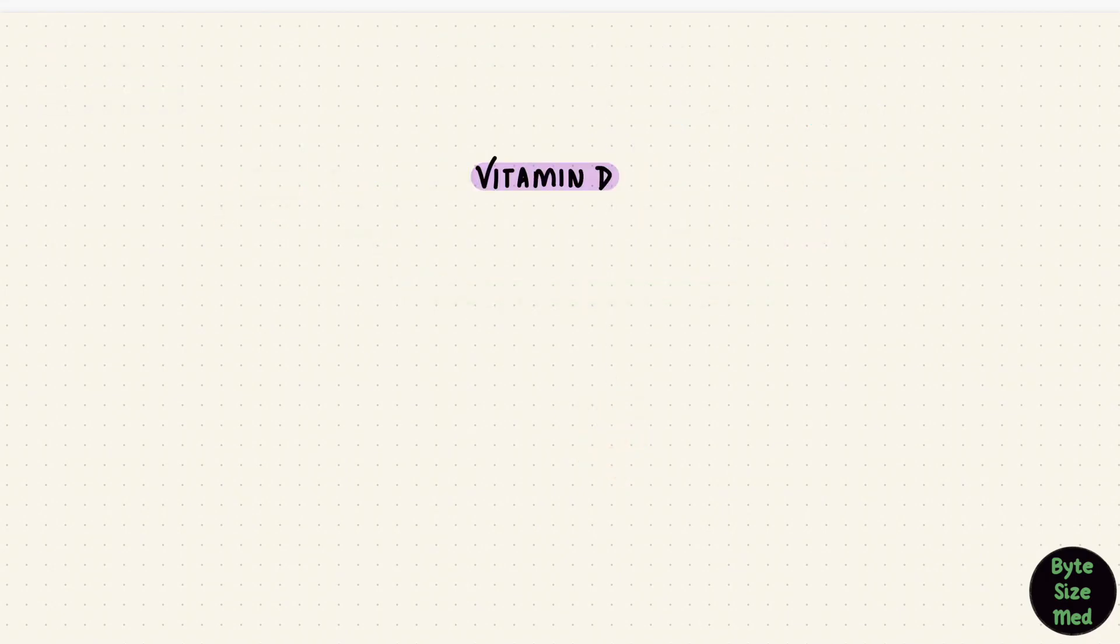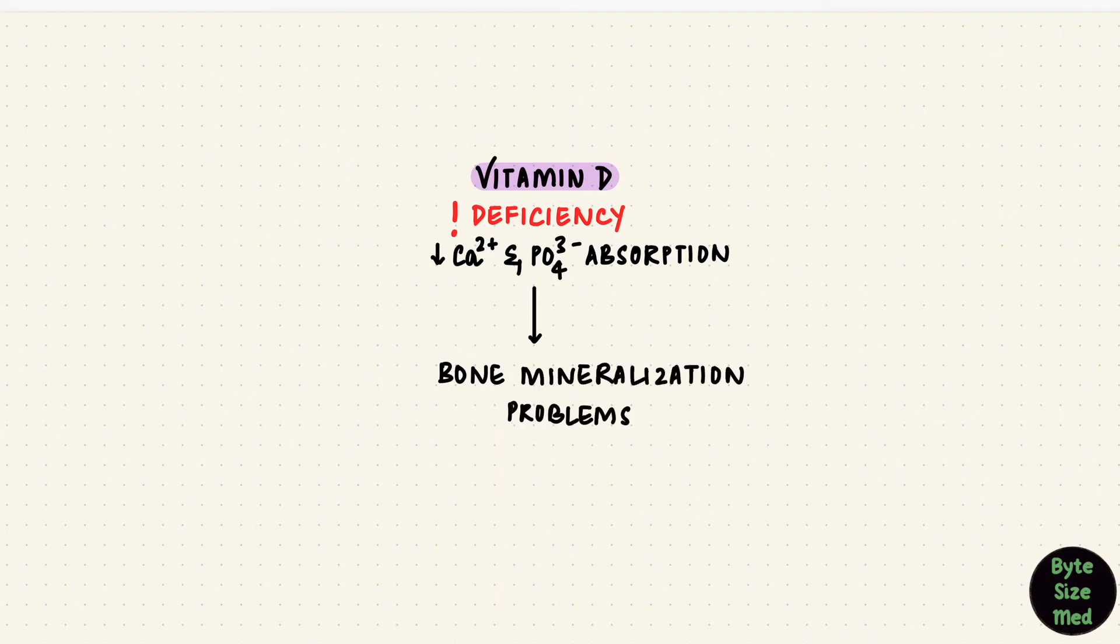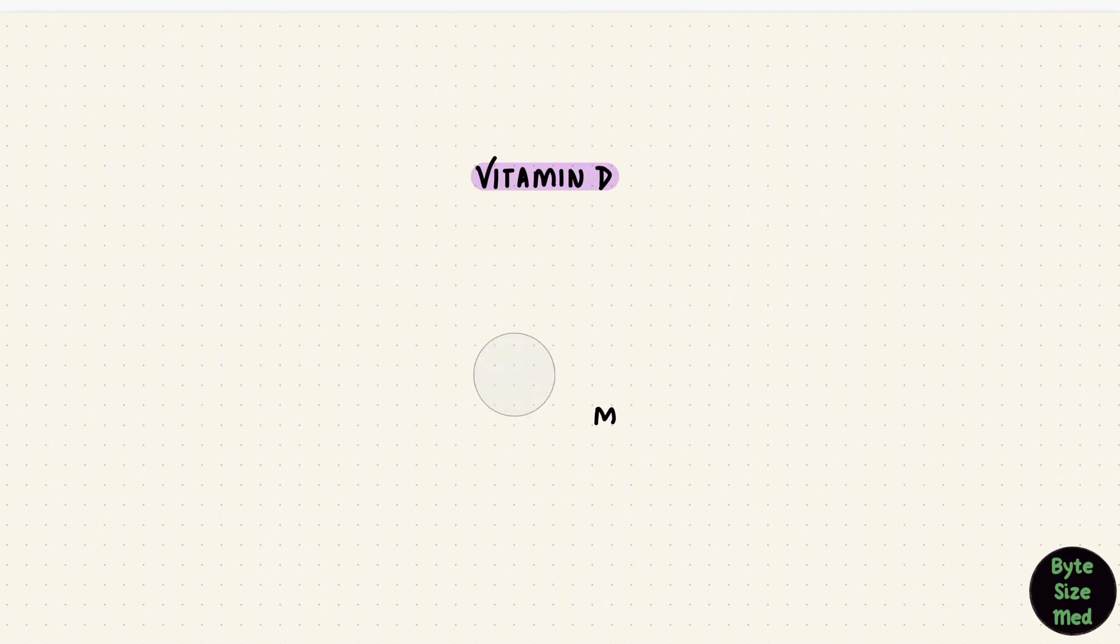A little application here. In a deficiency of vitamin D, there would not be good absorption of calcium and phosphate, resulting in bone mineralization problems in addition to other things. In children, that is rickets, when it affects growing bones, though there are lots of types of rickets. Vitamin D deficiency is a cause of rickets. In adults, there can be softening of bones. That's called osteomalacia. That's a start to learning about disorders associated with vitamin D.